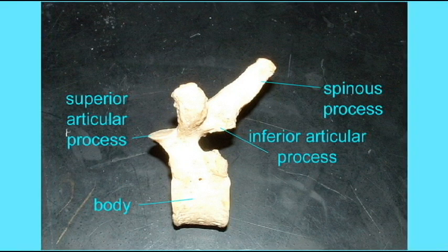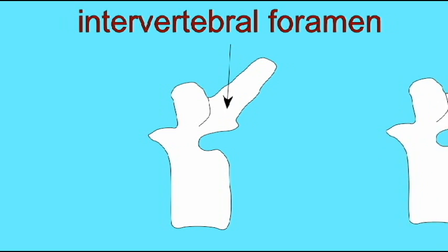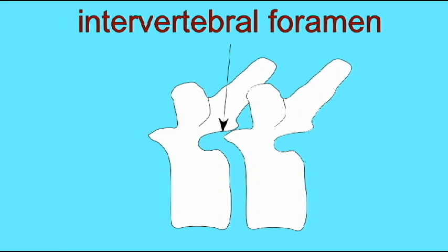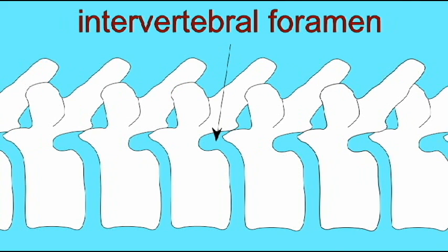The term intervertebral foramen literally means the hole between the vertebrae, and this space is not something you can observe on any one single vertebrae. It is only evident when two vertebrae are fitted together. And so when you consider the vertebral column, you note the intervertebral foramina, through which spinal nerves leave the spinal cord and go to the sites that they innervate.